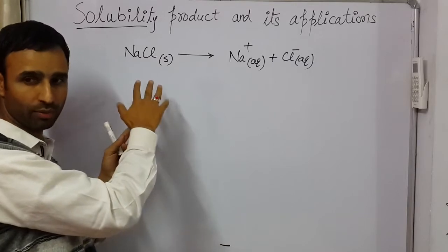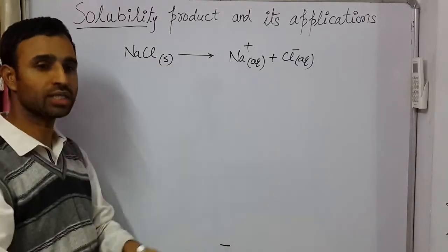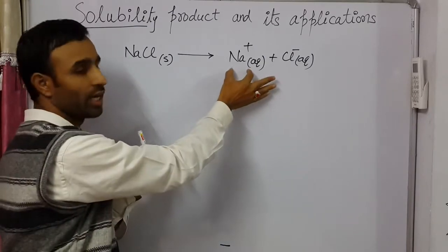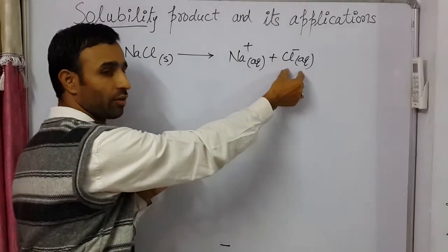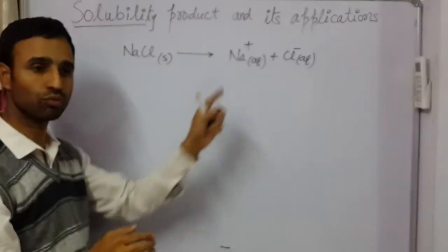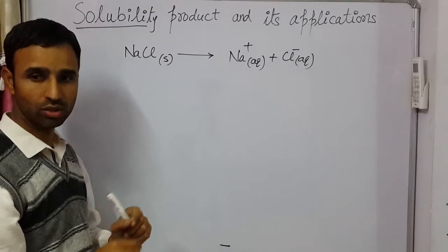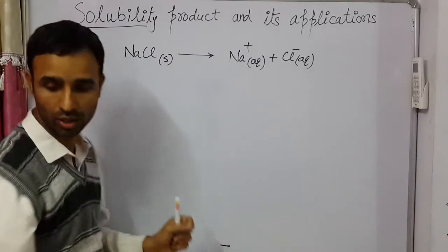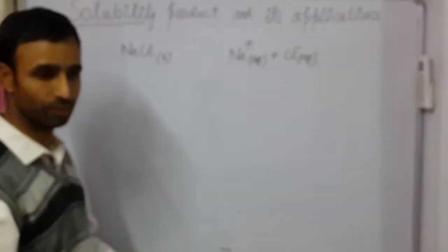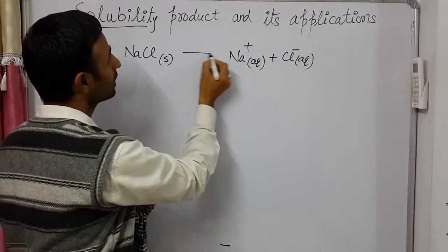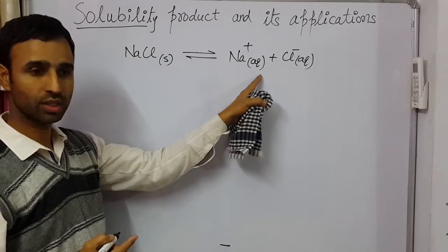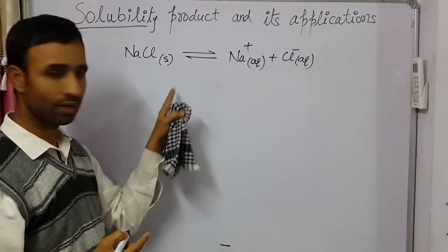At the saturation point, if we add more NaCl, it gets dissolved, and an equivalent amount of Na+ and Cl− ions from the solution will combine to form NaCl solid. So this forward reaction reaches equilibrium: NaCl solid is in equilibrium with Na+ aqueous and Cl− aqueous.